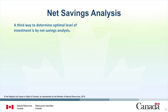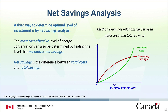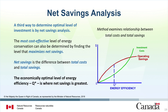A third way to determine optimal level of investment is by net savings analysis. This graph shows that the most cost-effective level of energy conservation can be determined by finding the level that maximizes net savings. Net savings is the difference between total costs and total savings. The investment cost curve is compared against an operating savings curve, which is the difference between operating cost at zero level of investment and the operating cost at any other level of investment. The economically optimal level of energy efficiency, Q, is where net savings is greatest.